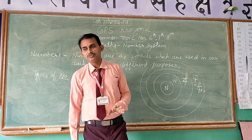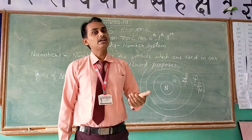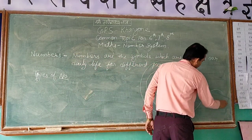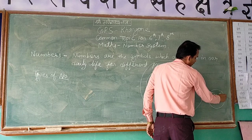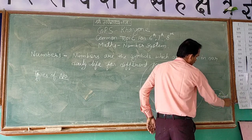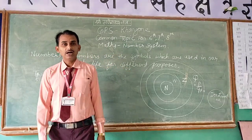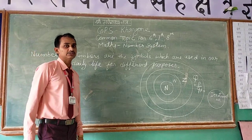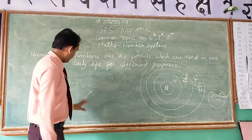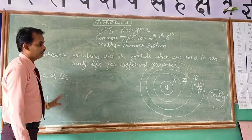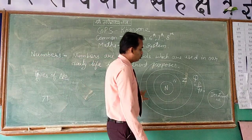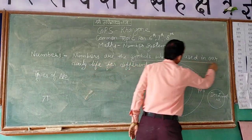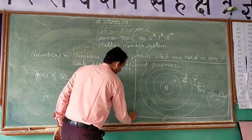Now, there are some numbers which cannot be represented in the form of P over Q. For example, pi is such a number which cannot be represented in the form of P over Q, so pi is an irrational number. The group of rational numbers and irrational numbers together is known as real numbers.